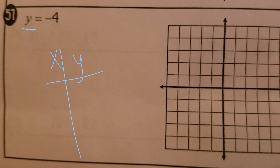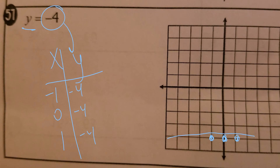Because this says y equals 2, I get to pick whatever I want for x, and then y automatically has to be negative 4. So I go negative 1, down to 4 — put a dot — 0, negative 4 — put a dot — 1, negative 4. That's how I double check and make sure, without having to remember whether y equals means left, right, up, or down.